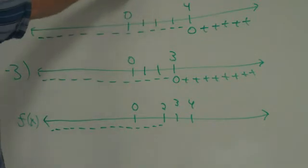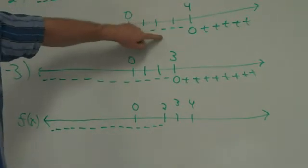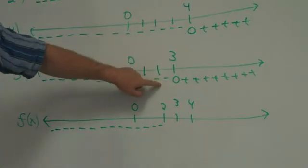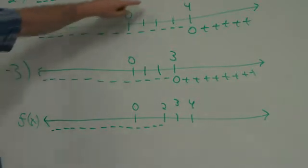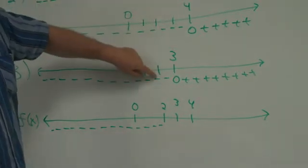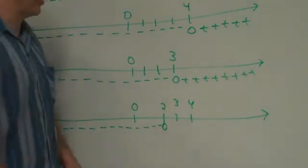And that happens until I get to 2. When I get to 2, I have 0 times a negative divided by a negative. What is 0 times a negative divided by a negative? 0. So at 2, it's 0.